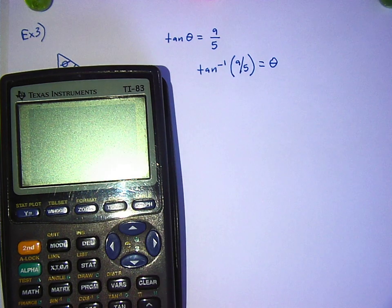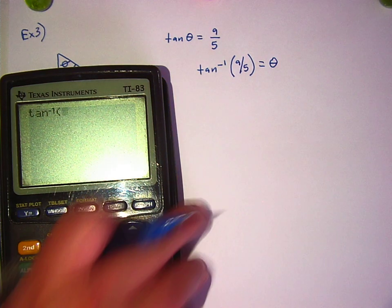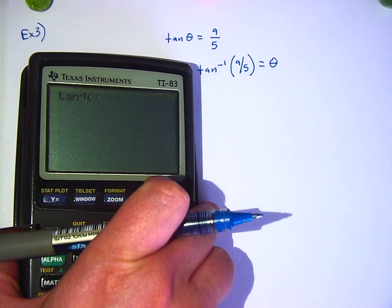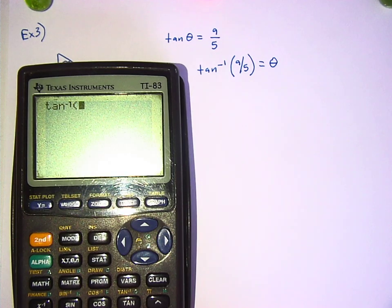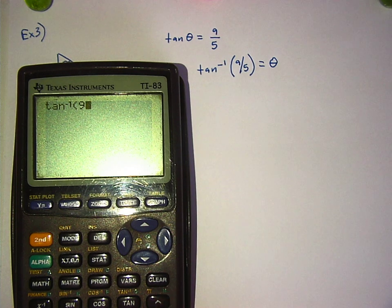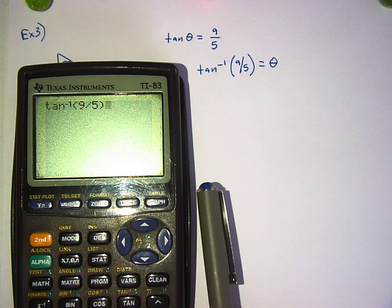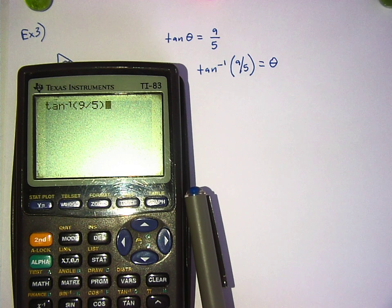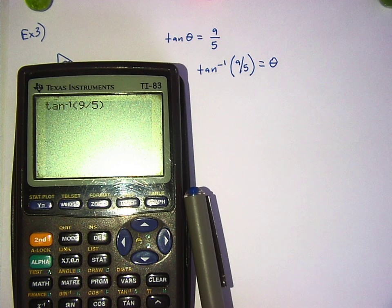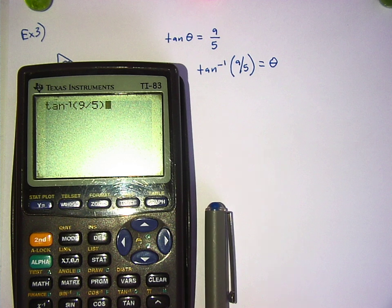So in my calculator, I'm going to hit second and then the tangent button. Do you see how that brings up that negative 1 by the tangent? That means inverse. And then you don't even have to figure out what 9 fifths is. You can literally just type in 9 divided by 5. Put it in your calculator. Inverse tangent. Show your partner how to do it.